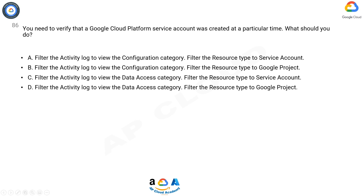Option D: Filter the activity log to view the data access category. Filter the resource type to Google Project.